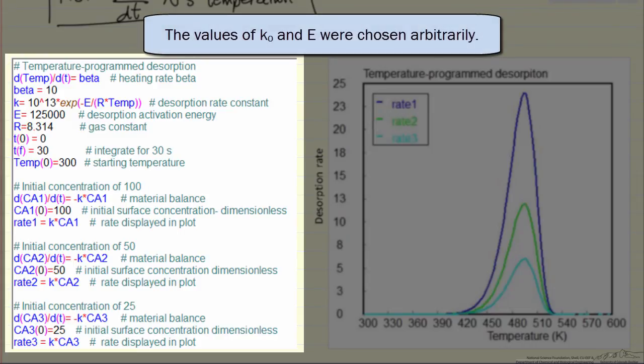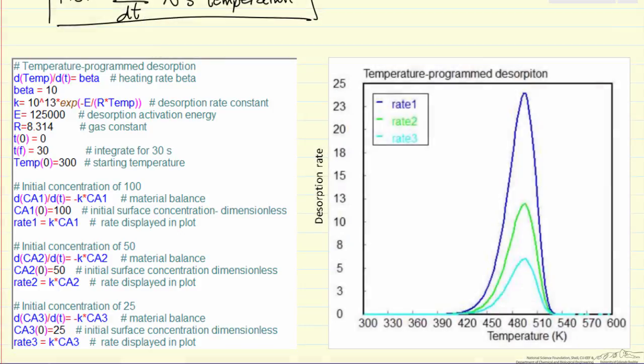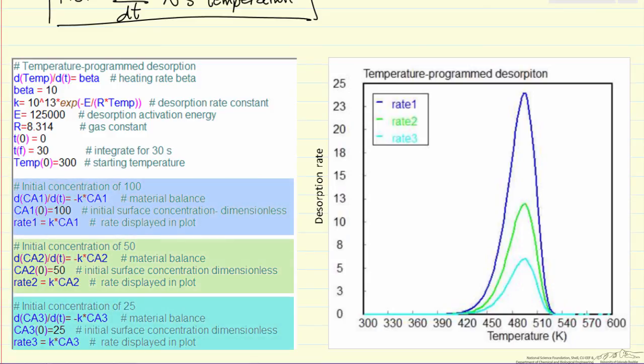So on the left is a POLYMATH program with a number of comments of what we are doing, but basically we are solving two ordinary differential equations simultaneously. And then plotting the rate of desorption, that is what we measure experimentally, as a function of temperature. And what I am showing in these three plots are for three starting concentrations.